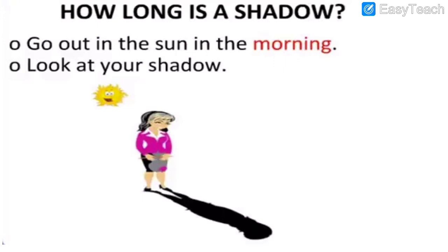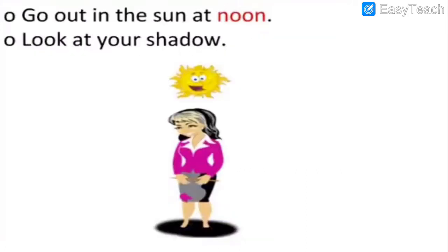When you go out in the morning time in the sunlight, look at your shadow. The length of the shadow will be quite long. Try this in the morning around nine o'clock and you can see. Then the second thing — you have to go out in the sun at noon, around one or two o'clock.